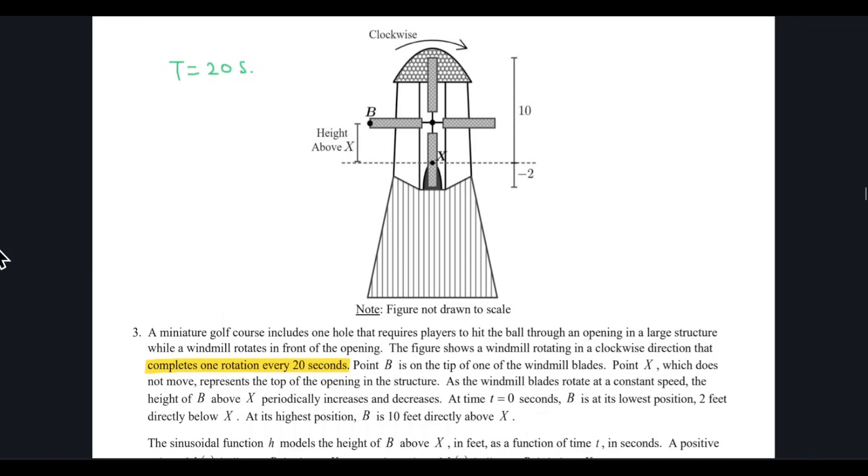At t equal to 0, B is at the lowest point, and that's important for us. The lowest point is 2 feet below the x line, so they clearly mention that it is 2 feet below the x, and the highest is 10 feet above the x.